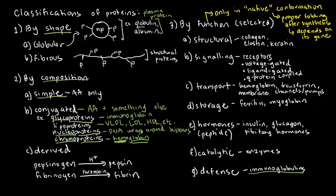Regardless if I have a simple or conjugated protein, they can be converted to derived proteins. Derived proteins have been modified chemically, usually by hydrolysis.